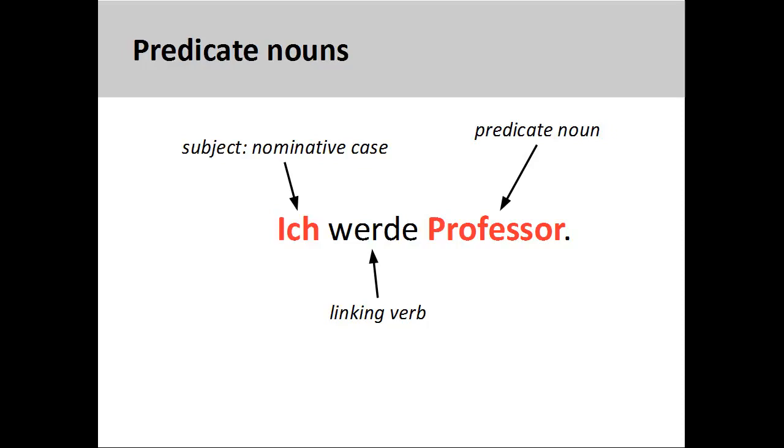Finally, it is important to note that other verbs besides forms of sein, to be, can also function as a linking verb. In this sentence, ich werde Professor, I become a Professor, the verb werde simply reports on the subject's change of being. Since no real action is described in the sentence, both subject and predicate are in the nominative case.